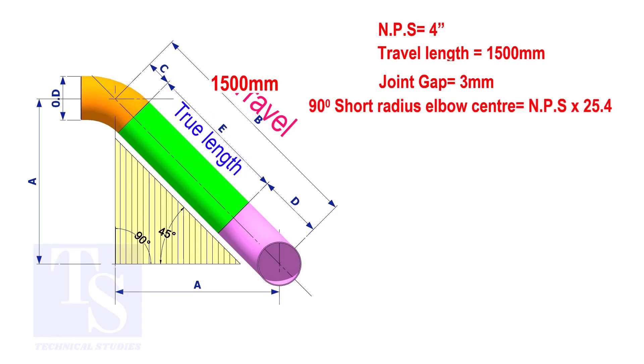To calculate the elbow center of a 90 degree short radius elbow, multiply the nominal pipe size by 25.4. The answer is 101.6 millimeters.